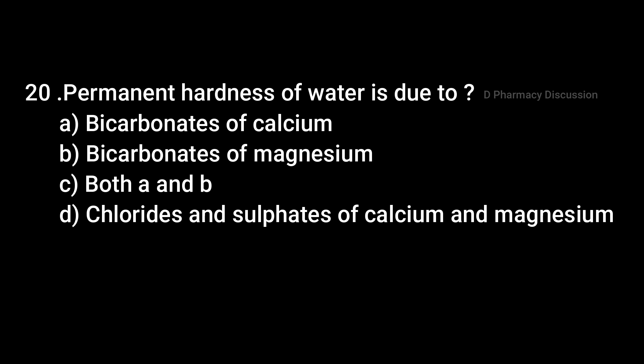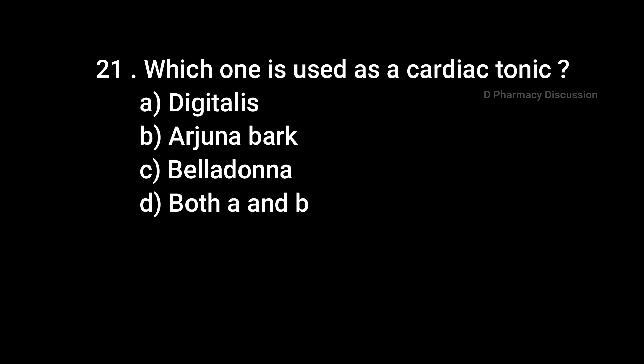Question 20: Permanent hardness of water is due to — Option A: Bicarbonates of calcium, B: Bicarbonates of magnesium, C: Both A and B, D: Chlorides and sulfates of calcium and magnesium. Correct answer is Option D: Chlorides and sulfates of calcium and magnesium. Question 21: Which one is used as a cardiac tonic? Option A: Digitalis, B: Arjuna Bark, C: Belladona, D: Both A and B. Correct answer is Option D: Both A and B — Digitalis and Arjuna Bark are used as cardiac tonics.